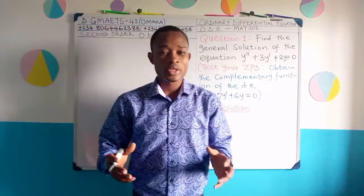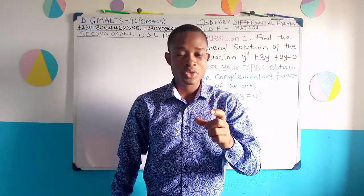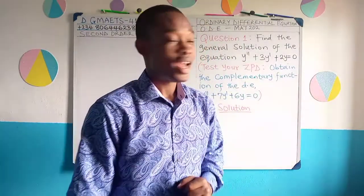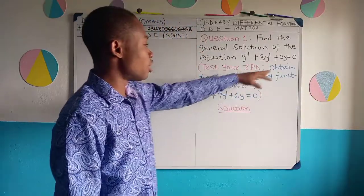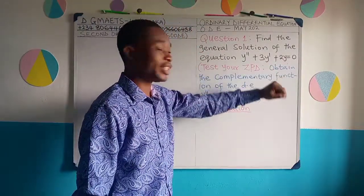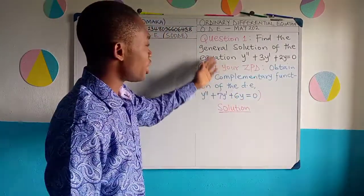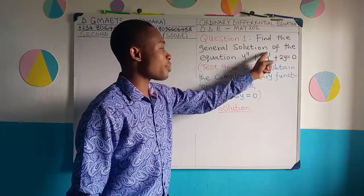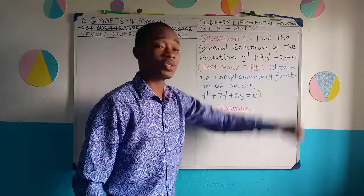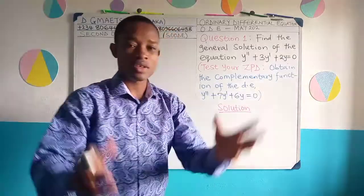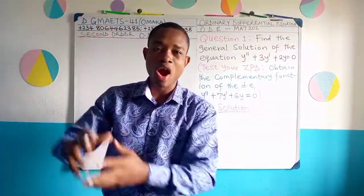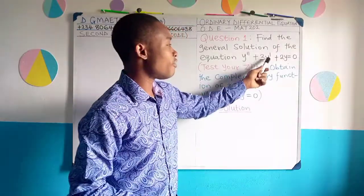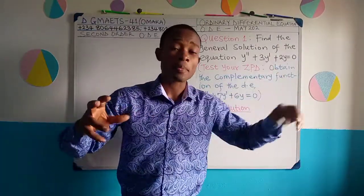It is now time to pick questions and solve. We've got this first question on the board. This question is a homogeneous study. We are required to find a general solution of the equation y'' + 3y' + 2y = 0, where the double prime represents the second order derivative of y and the single prime represents the first order derivative of y.